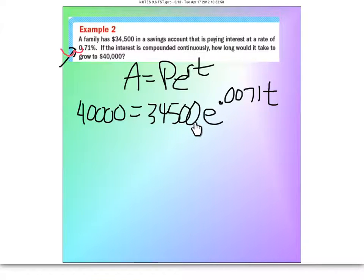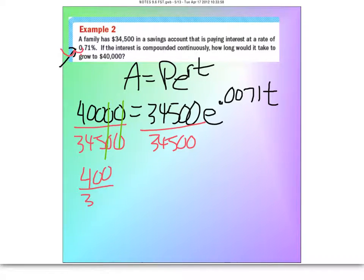So to do that, we have to get rid of the $34,500. We're going to do the algebra and just divide by that on both sides. Now I'm just going to keep it as a fraction, but I'm going to notice those zeros cancel out. So I'm just going to put 400 over 345.